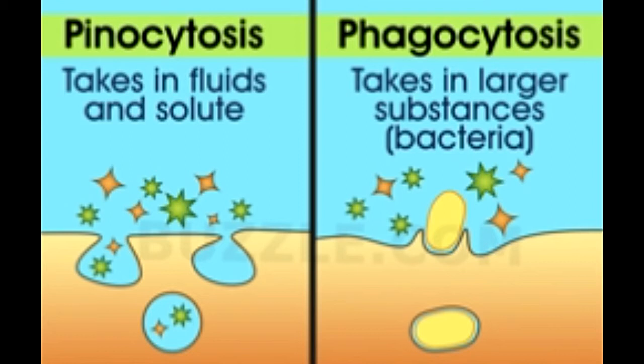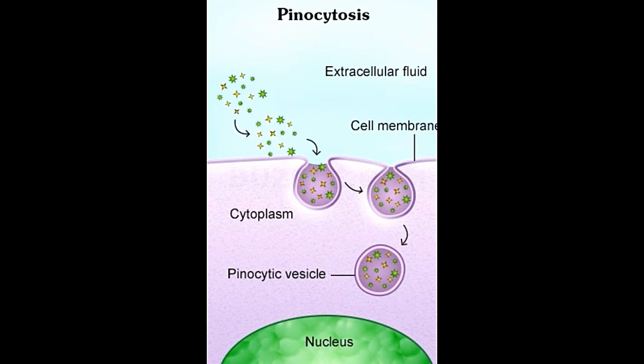In receptor-mediated endocytosis, there is internalization of molecules that bind to cell receptors specific for those molecules. We will discuss phagocytosis and pinocytosis in detail now. Although both are basic mechanisms of endocytosis, there are a few differences between them.